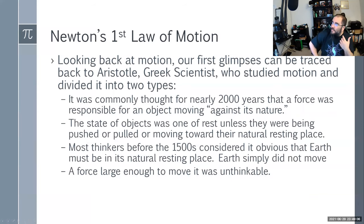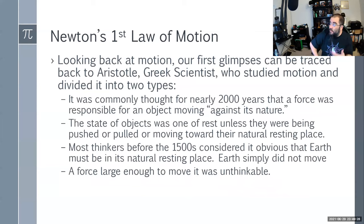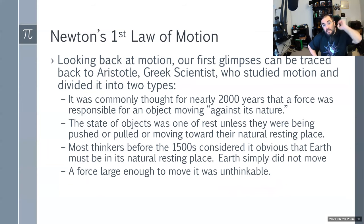It was commonly thought for 2,000 years that a force was responsible for an object moving against its nature. Most thinkers before the 1500s considered it obvious that the earth must be in its natural resting place — the earth simply didn't move, and the sun moved around the earth, because they thought the sun was a tiny object in the sky. The earth was so huge that it moving was considered unthinkable.